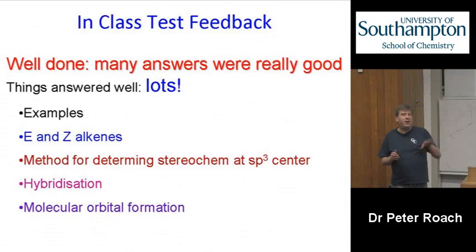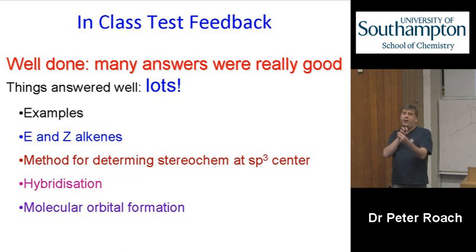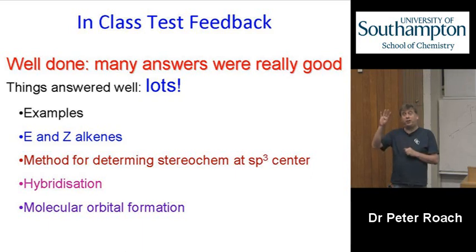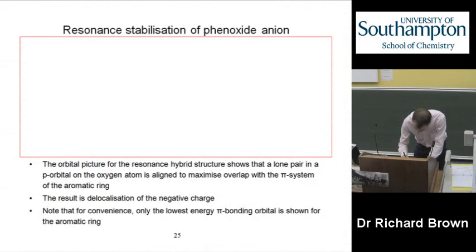I would say maybe a third, maybe a quarter of you forgot to rotate the hydrogen away from you in one of the questions. There are four possible groups and you have to rotate the lowest priority group away from you. So here's our phenoxide ion.